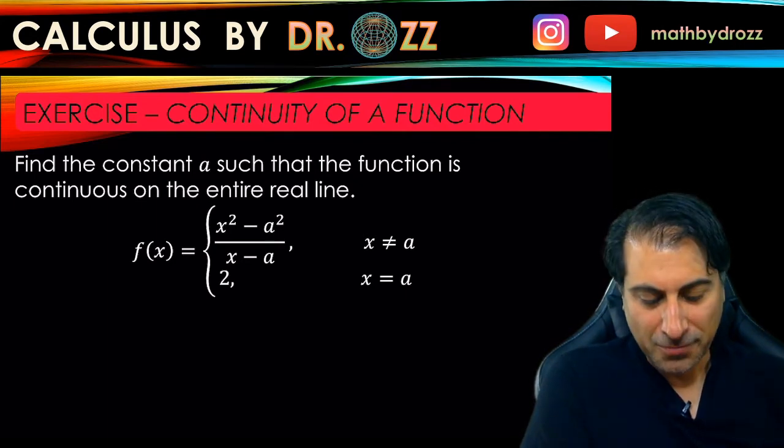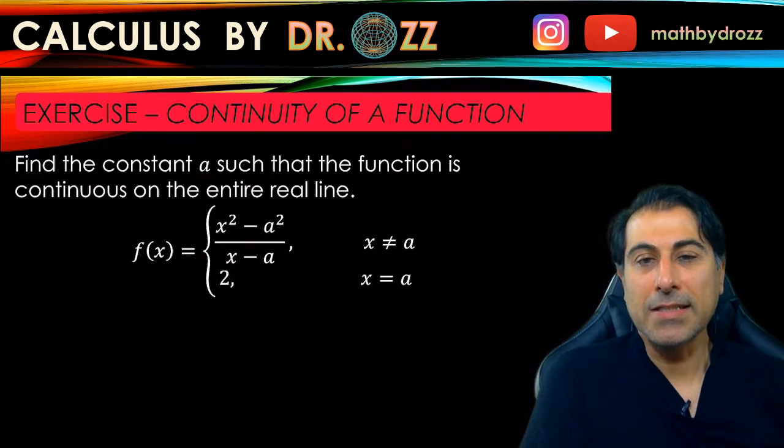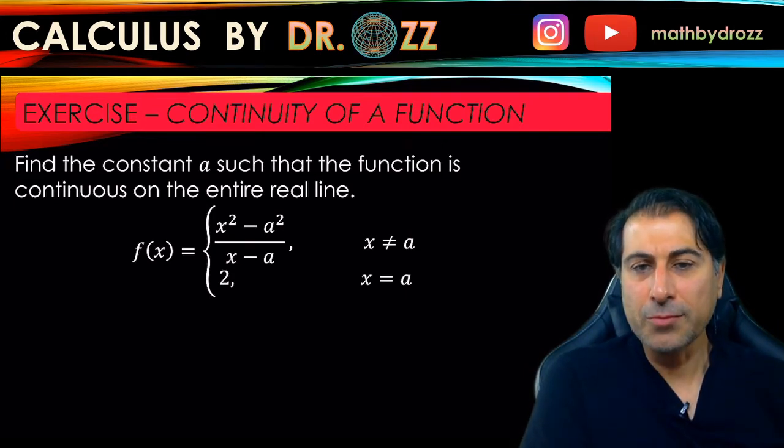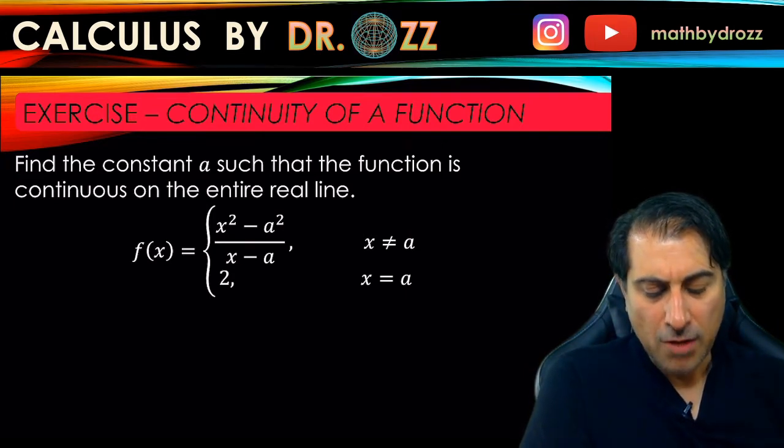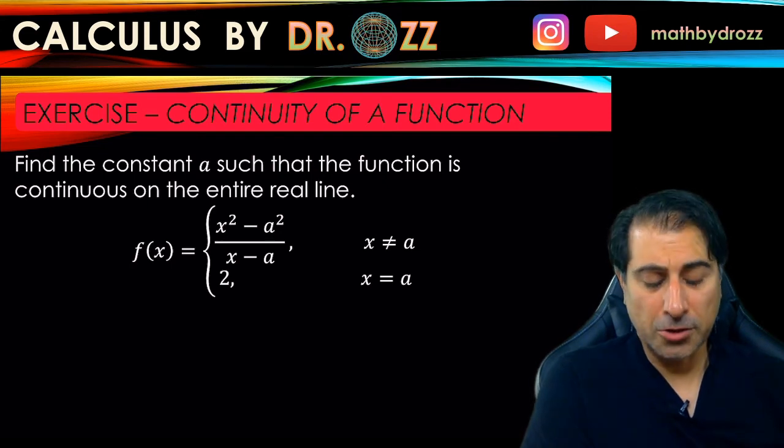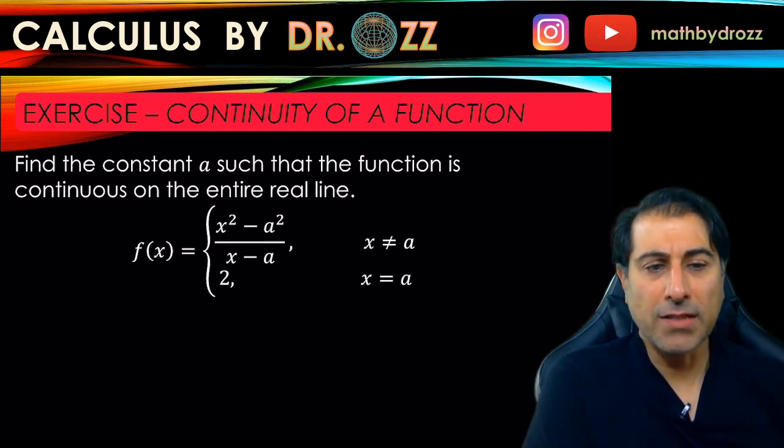but we're going to determine that constant so that this piecewise function is a continuous function. So to achieve that, first we need to remember what continuity is. Continuity means that the function first off should be defined at the junction point.